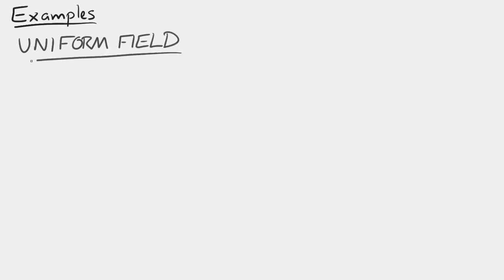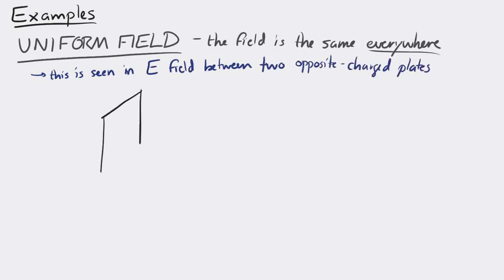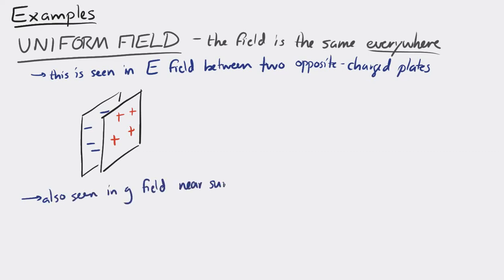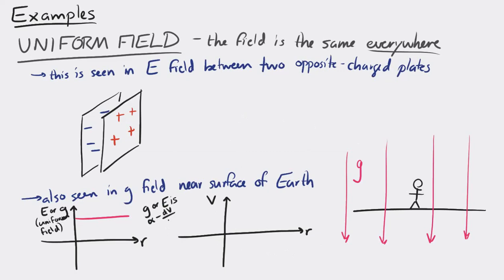Let's start with a uniform field — a field that is the same everywhere, with a constant value at all places. We see uniform electric fields between plates carrying opposite charges, like in large capacitors. We also see roughly uniform gravitational fields near the surface of the Earth. If the field is uniform, the field versus distance graph is just a straight horizontal line. The potential must then look like a straight sloping line, because the negative gradient of that potential must give us the uniform field.